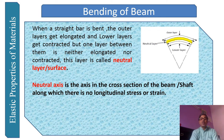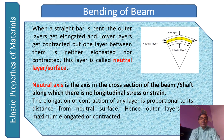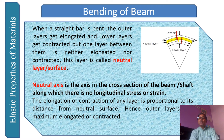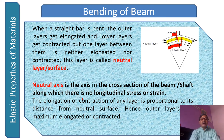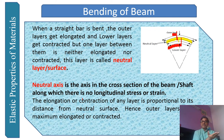The elongation or contraction of any layer is proportional to its distance from the neutral surface. As you move from the neutral axis toward the upper surface, elongation increases; moving downward, contraction increases. Hence the outer layers — both the top surface and bottom surface — are maximum elongated or contracted respectively.